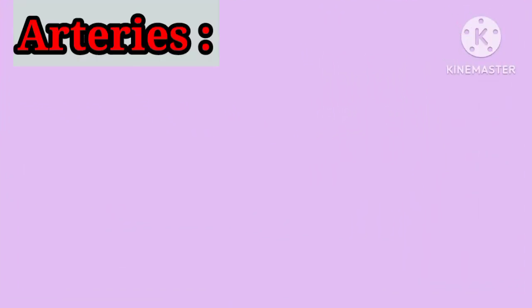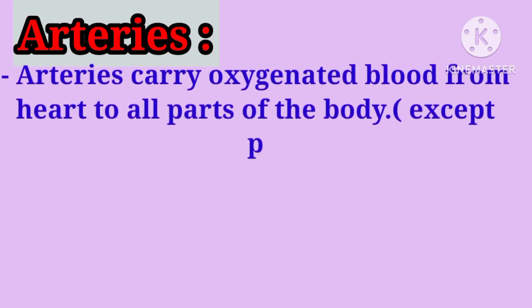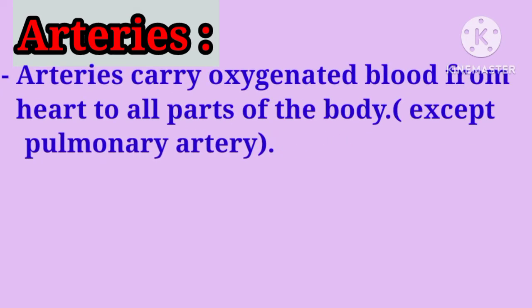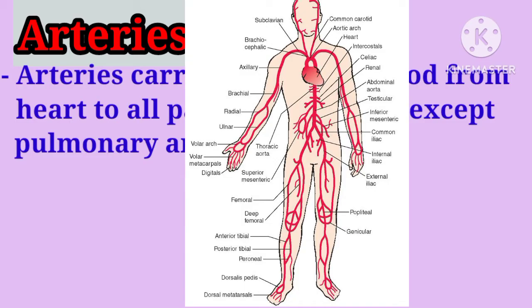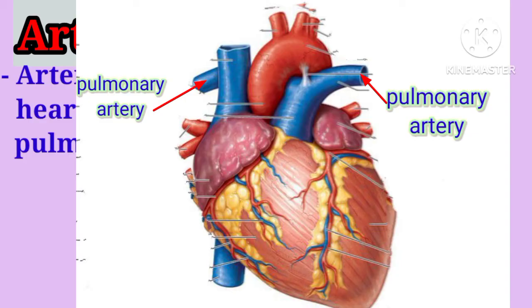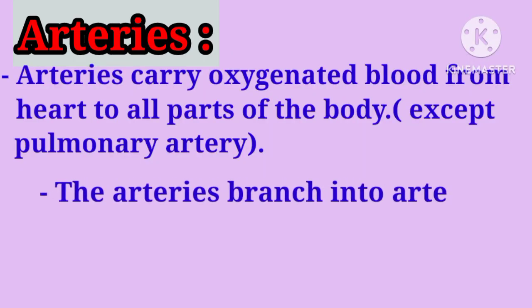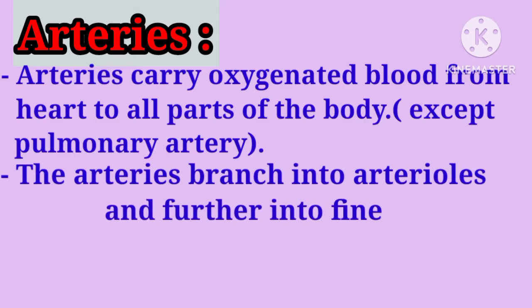First blood vessel: arteries. Arteries carry oxygenated blood from the heart to all body parts. This is the network of arteries present in the body. Except for the pulmonary artery — the pulmonary artery carries deoxygenated blood from the heart to the lungs for oxygenation. Arteries branch into arterioles and further into fine capillaries.